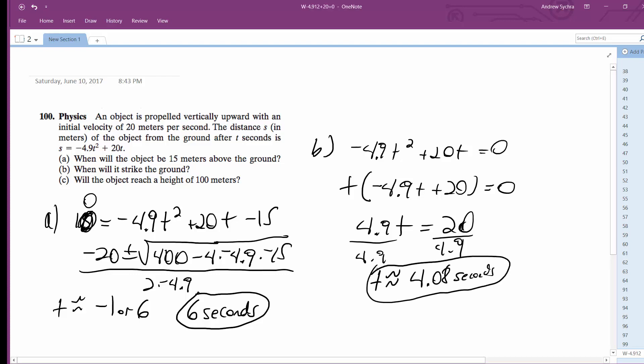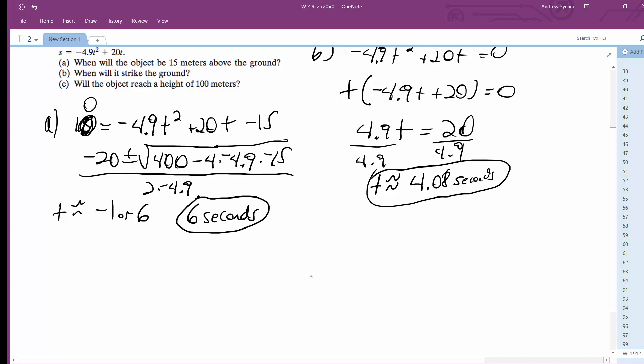And then finally, the third part: Will the object reach a height of 100? Well, let's find out. You got negative 4.9 T squared plus 20 T equal to 100, or negative 4.9 T squared plus 20 T minus 100 equals zero. Then plug this into the quadratic formula.